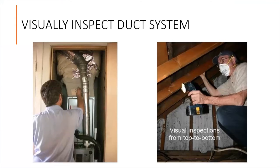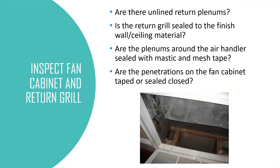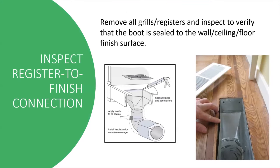You should be looking at the entire system from top to bottom. When inspecting the fan cabinet return register, check for the following: Are there any unlined return plenums? Is the return grill sealed to the finished wall or sealing material? Are the plenums around the air handler sealed with mastic and mesh tape? Are the penetrations on the fan cabinet itself taped or sealed closed? When you inspect to verify if the boot is sealed to the floor, you'll likely find plenty that look like it's not sealed. You can use caulk to seal the boot to the floor, or fold aluminum tape from the edge of the floor down into the boot, where the tape on the finished floor can be covered by the register.